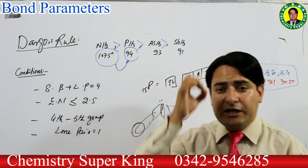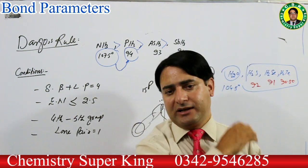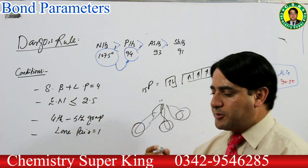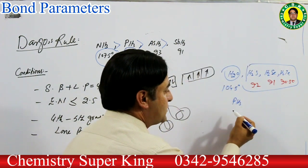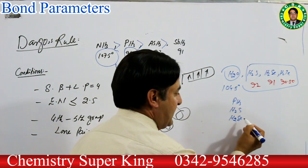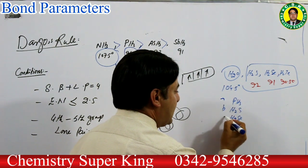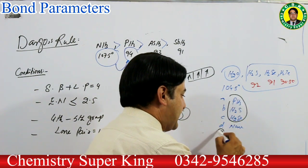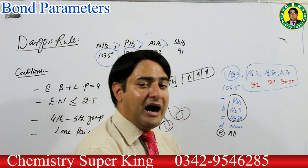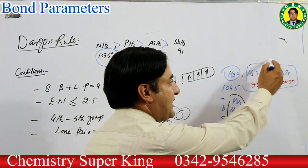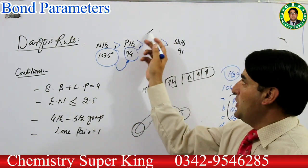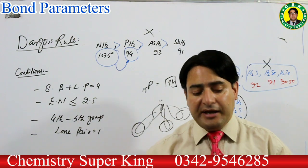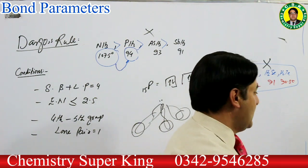MCQ: کس کے اندر sp3 hybridization ہے — PH3، H2S، یا NH3؟ Drago's rule کے مطابق PH3 اور H2S میں hybridization نہیں ہوتی — ان کا bond angle بہت کم ہوتا ہے اس لیے ان میں basically hybridization نہیں ہوئی۔ NH3 میں sp3 hybridization ہوتی ہے۔